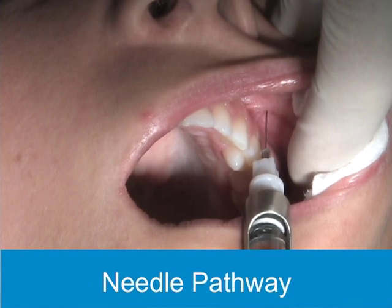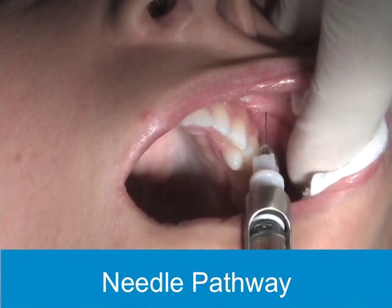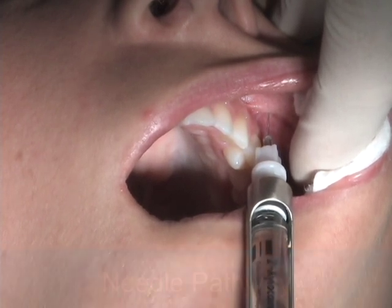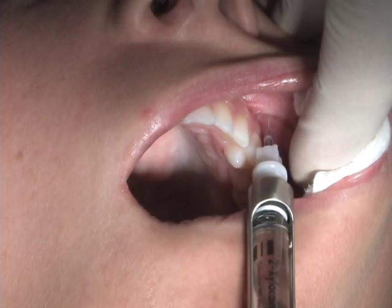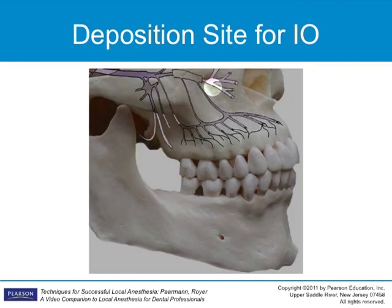The needle and syringe remain parallel to the mid-sagittal plane over the maxillary first premolar. Advance the needle slowly until the needle is directly over the infraorbital foramen. The depth of insertion is approximately two-thirds the length of the short needle or half the length of the long needle. The distance will vary according to the depth of the patient's vestibule. The needle should gently contact bone — it is the upper rim of the infraorbital foramen.